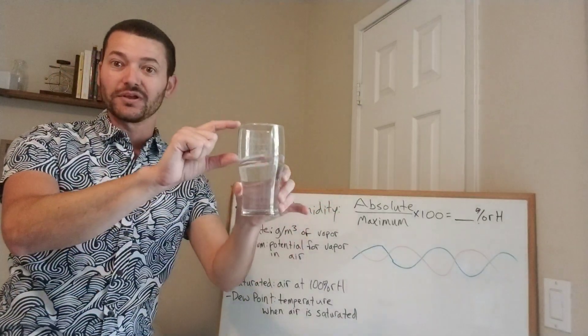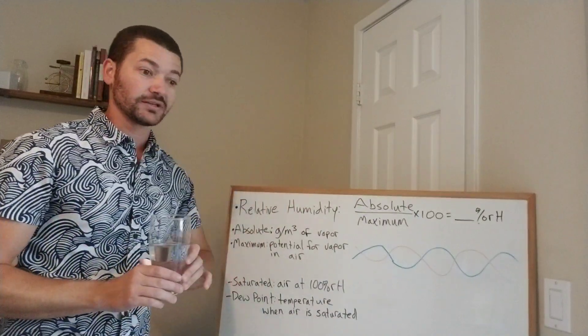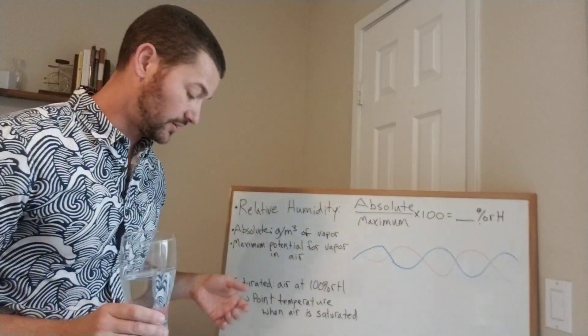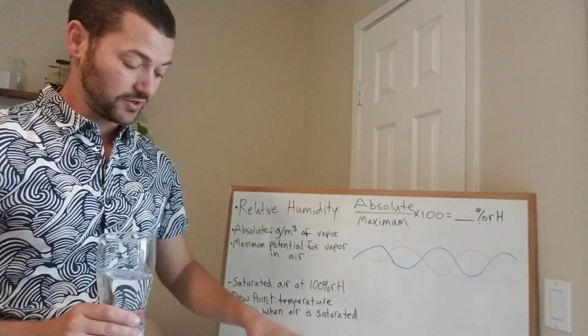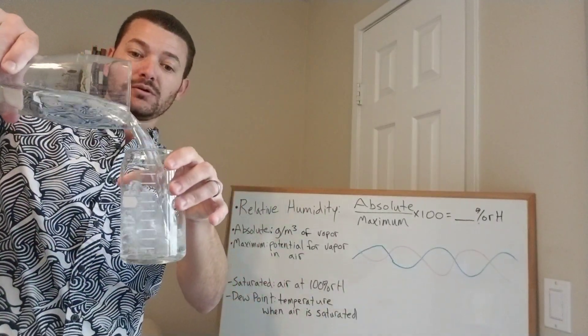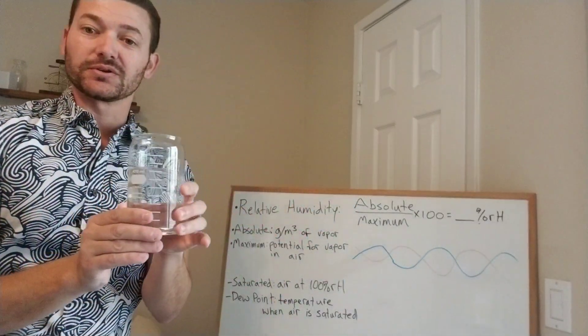So later in the day, it gets colder, sunset, so it's nighttime. And let's say that we go down to 70 degrees. So we're back at what we were in the morning, like 60% relative humidity.